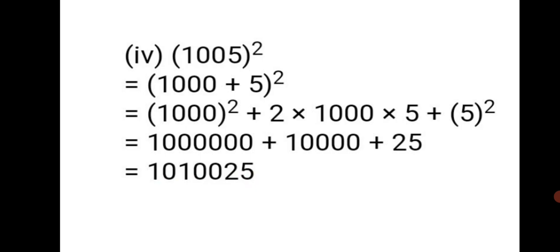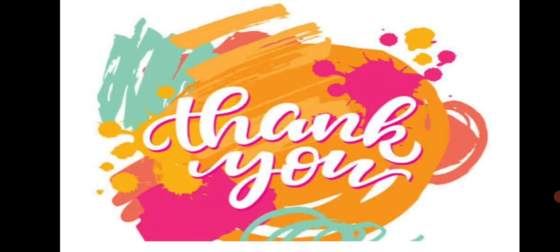This way we have completed Practice Set 50. Remember to note down the two important formulas: (a+b)² = a² + 2ab + b² and (a−b)² = a² − 2ab + b². Based on these, you can practice the sums. Do practice in your notebook, stay safe, keep learning, and thank you.